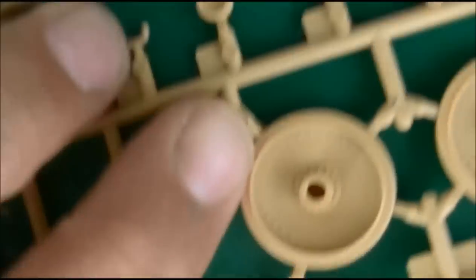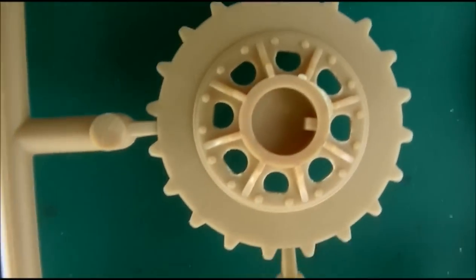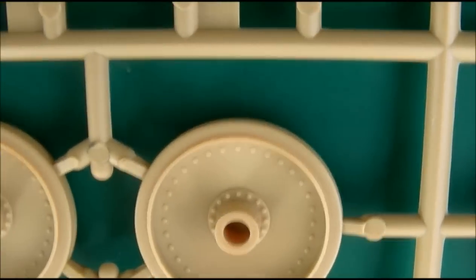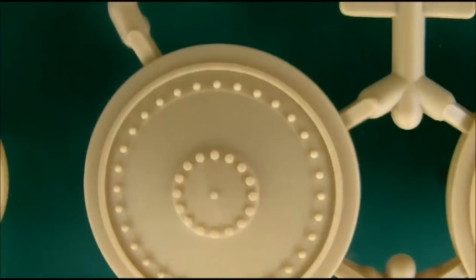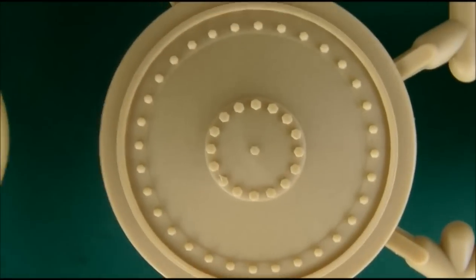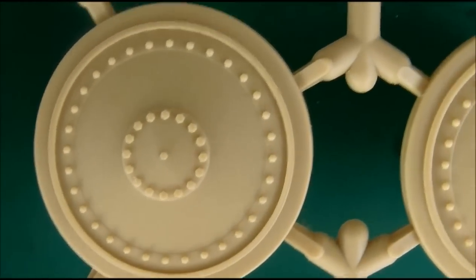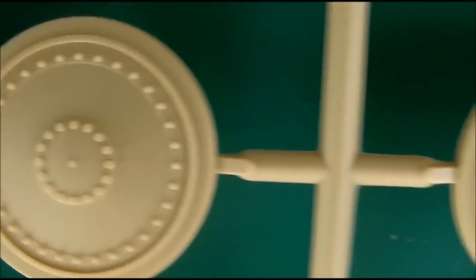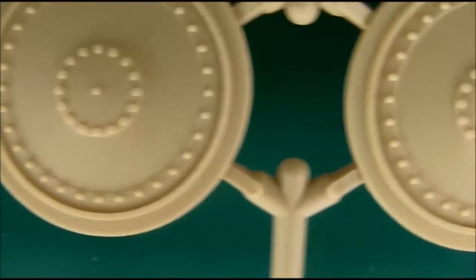And we got two the same sprues. So the road wheels I have to take off every second rivet. It's detailed here, that's shitty work. And the idler is there, sprockets here. Suspension arms here, the leaf spring suspension. It's a little bit soft on the detailing, it's a shame.